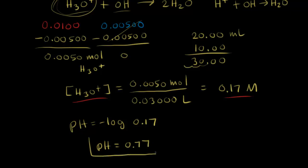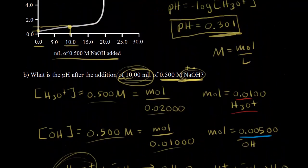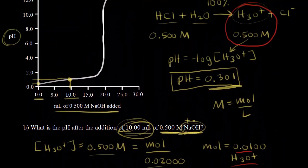So now we know: after adding 10 mLs of base, the pH is 0.77. Going back to our titration curve, after 10 mLs of base, the pH at that point is 0.77. In the next video, we'll analyze this titration curve further and look at some more points on it.